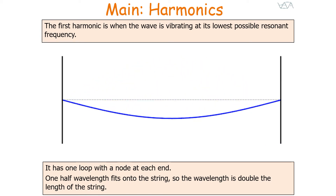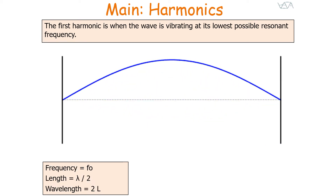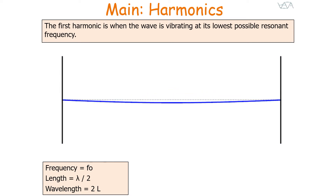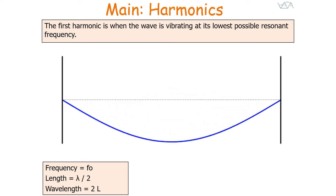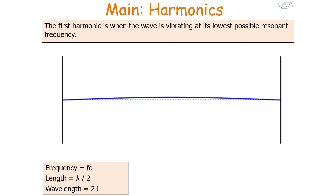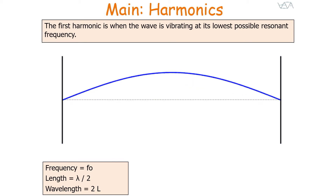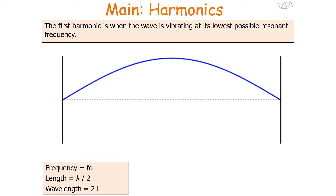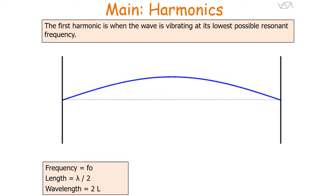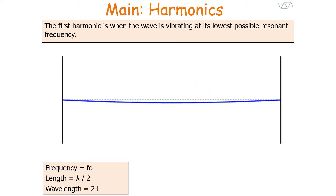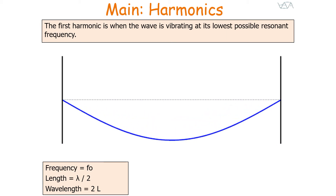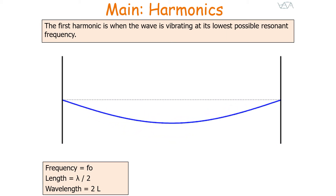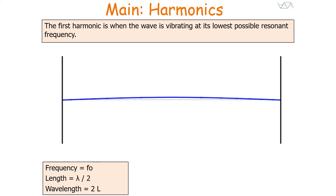For our first harmonic, our frequency we'll define as f₀. We know that the length is equal to the wavelength divided by two, and therefore the wavelength of the wave is equal to two times the length of the string.